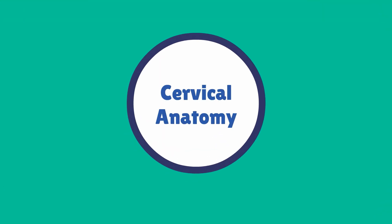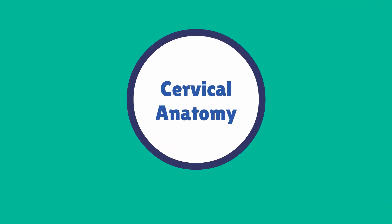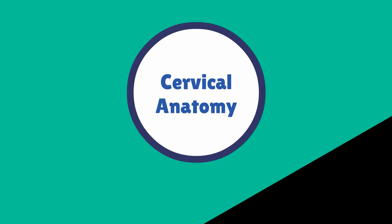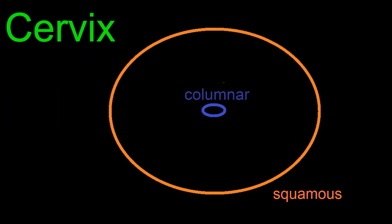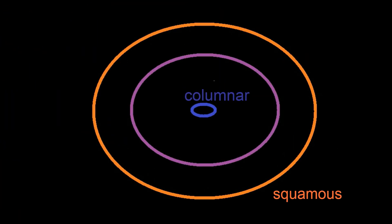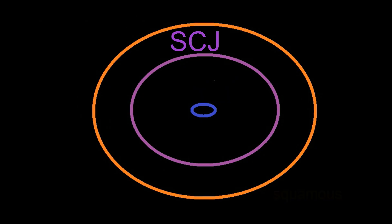HPV infects the cells of the cervix. The cervix is covered by both squamous and columnar epithelium. The squamous columnar junction, or SCJ, where these two meet is an important landmark where over 90% of lower genital tract cancers arise. The squamous epithelium is on the vaginal side of the SCJ and the columnar epithelium is on the endocervical side of the SCJ.